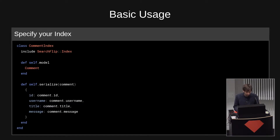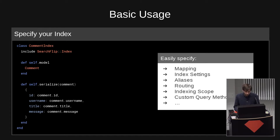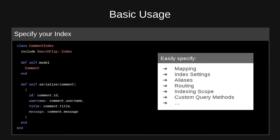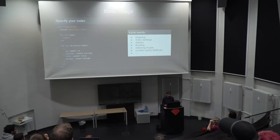Now we'll have a deeper look at how SearchFlip gets integrated into your Rails app. This is what an index specification with SearchFlip looks like: you create an index class, include SearchFlip::Index, specify some model, and then tell SearchFlip how to serialize this model. The serialization is the part that gets indexed — it will be sent to Elasticsearch, and these are the fields you can search through, aggregate, highlight, and all these kinds of things. Additionally within these index classes you can specify mappings, index settings, alias stuff, routing stuff — Elasticsearch is composed of shards — and it essentially gets applied automatically.